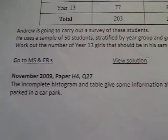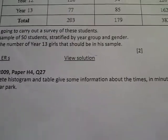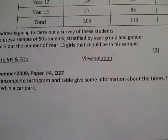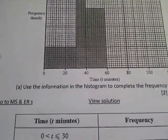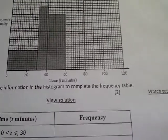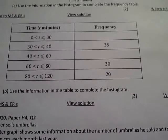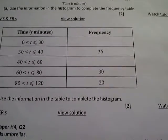This question says that the incomplete histogram and table gives some information about the time in minutes that cars were parked in a car park. We are told to use the information in the histogram to complete the frequency table, and then use the information in the table to complete the histogram.